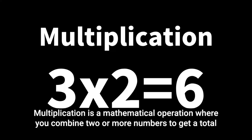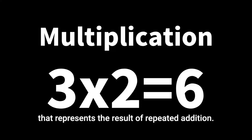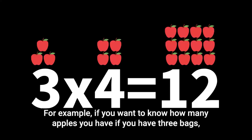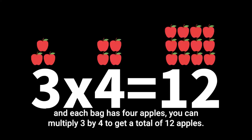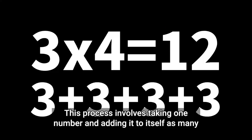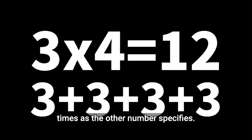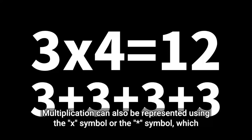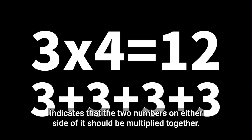Multiplication is a mathematical operation where you combine two or more numbers to get a total that represents the result of repeated addition. For example, if you want to know how many apples you have if you have three bags and each bag has four apples, you can multiply three by four to get a total of 12 apples. This process involves taking one number and adding it to itself as many times as the other number specifies. Multiplication can also be represented using the x symbol, which indicates that the two numbers on either side of it should be multiplied together.